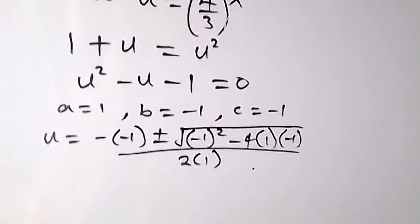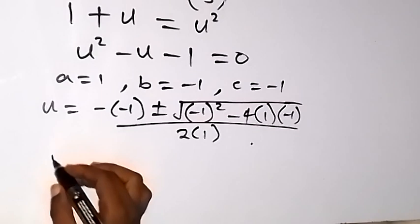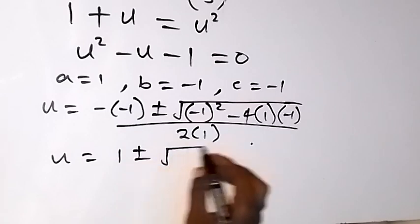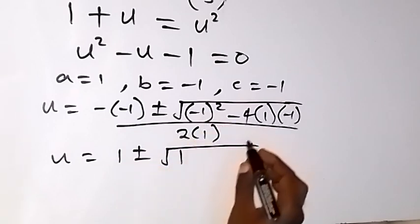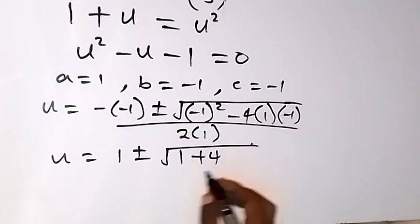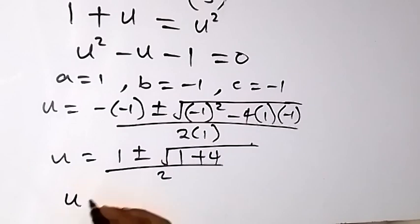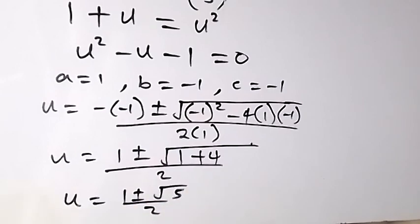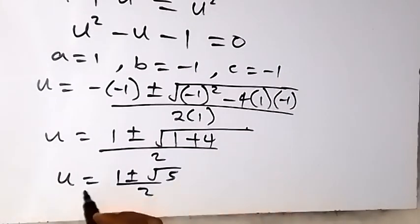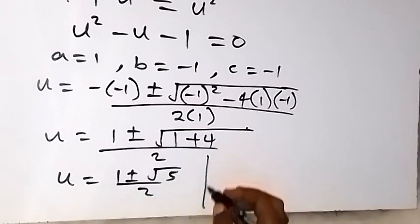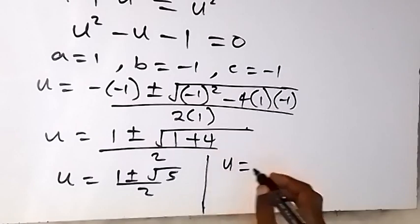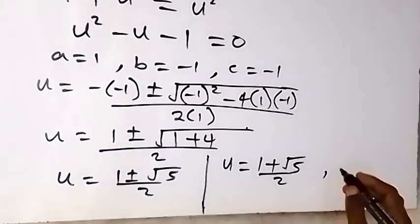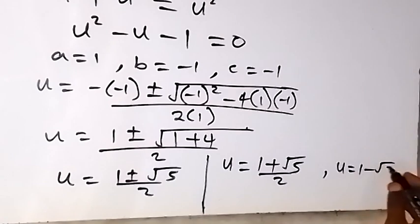When we solve this, u equals 1 plus or minus square root of — minus 1 squared is 1, then minus 4 times 1 times minus 1, that's plus 4 — over 2. So u equals 1 plus or minus square root of 5, all over 2. We have two solutions: u equals 1 plus root 5, over 2, and u equals 1 minus root 5, over 2.